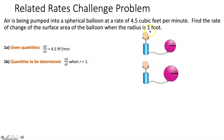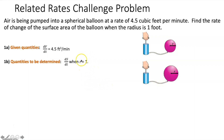One of the most common mistakes here is plugging in 1 for your radius right away, because then when you take the derivative, dR/dt no longer exists and you can't find your answer. So we're going to plug in 1 for R, but not until step 4.